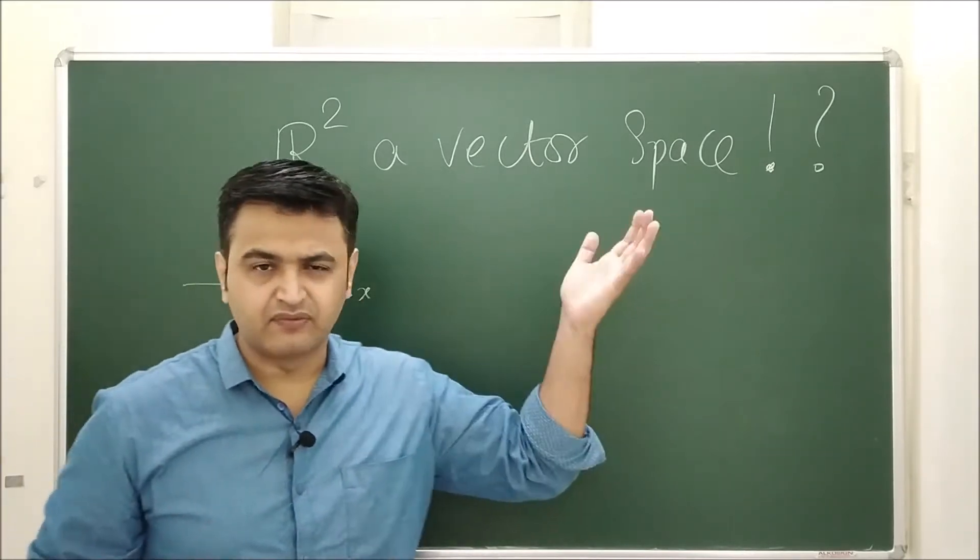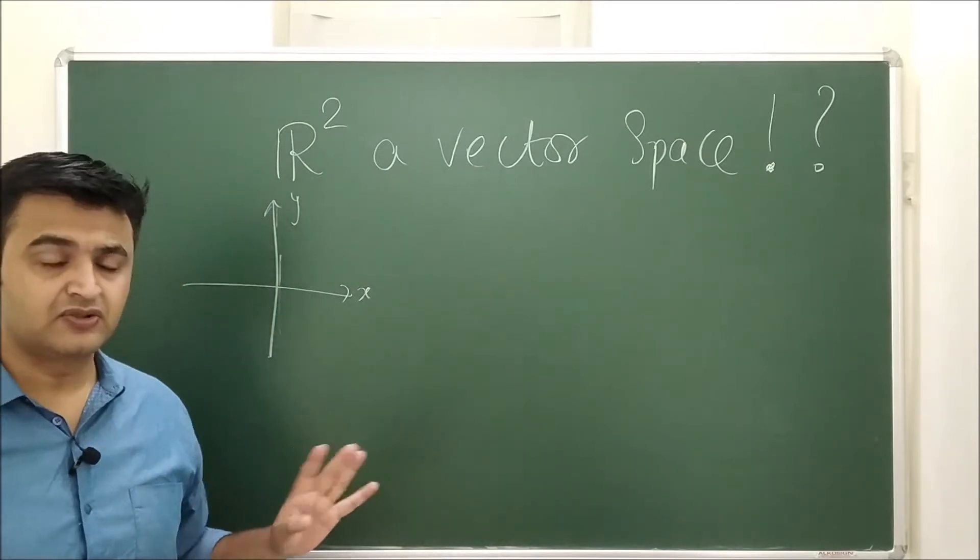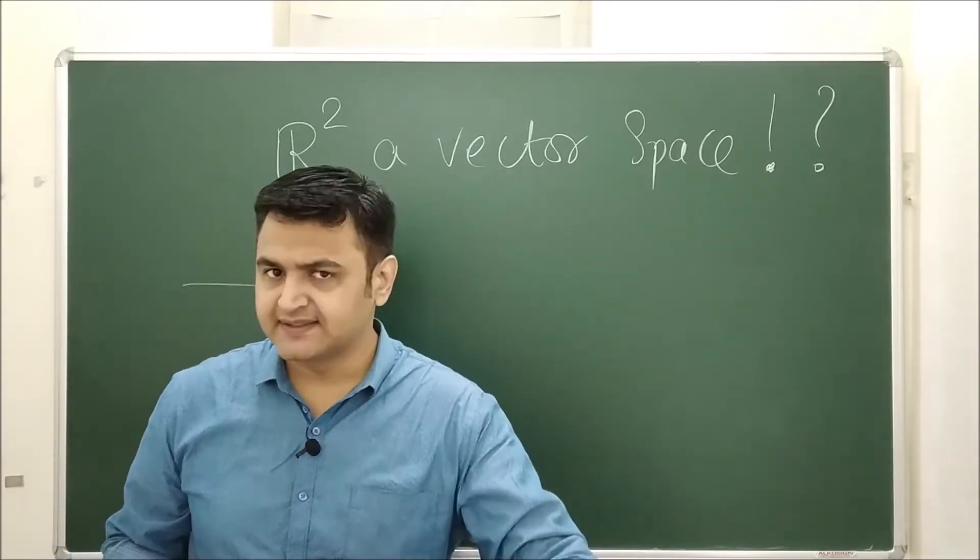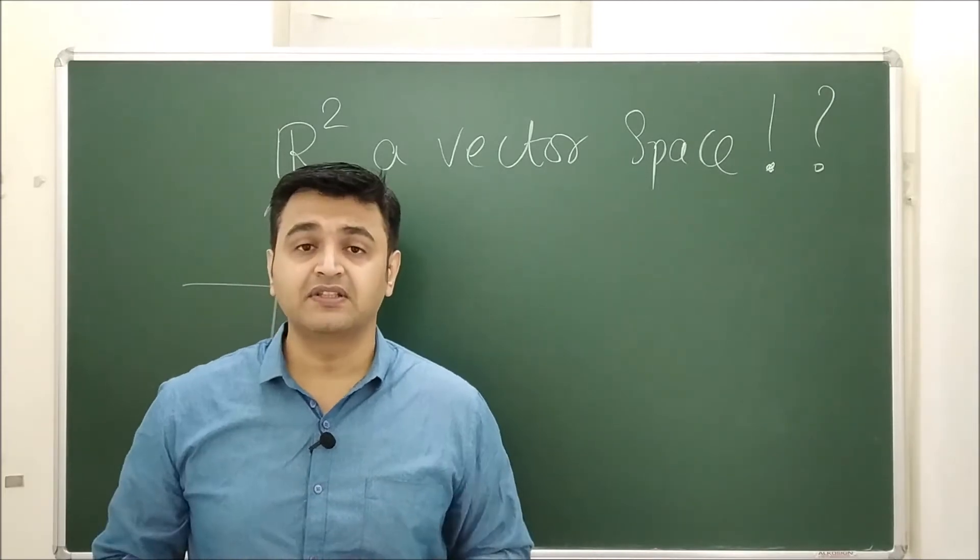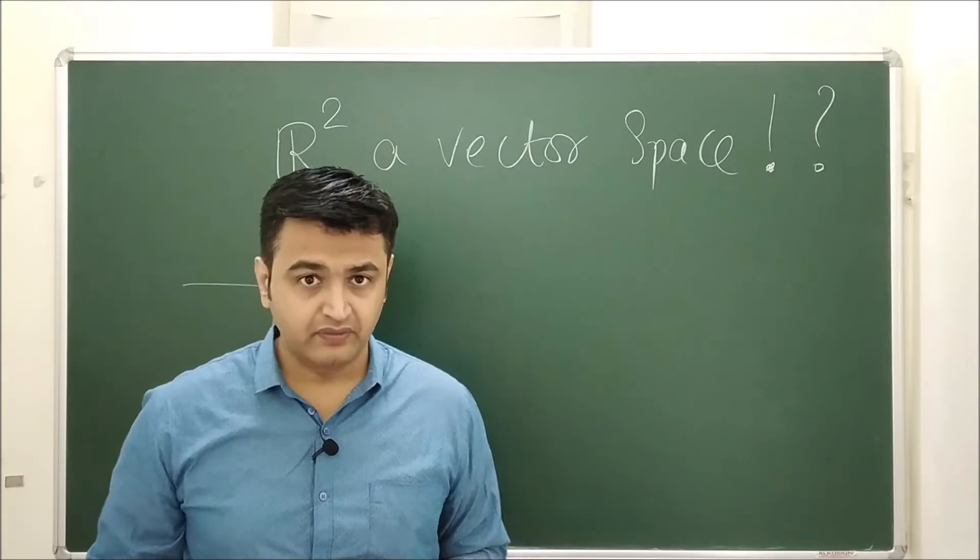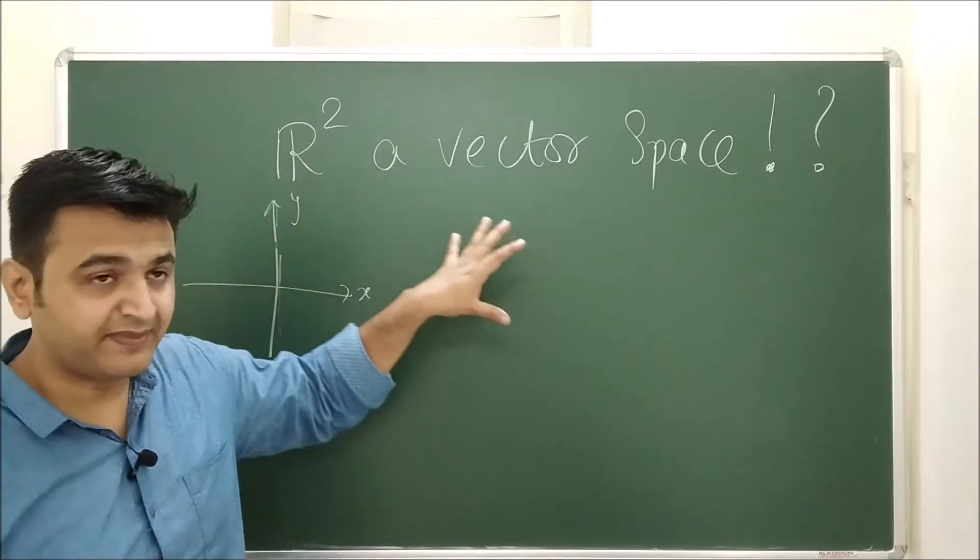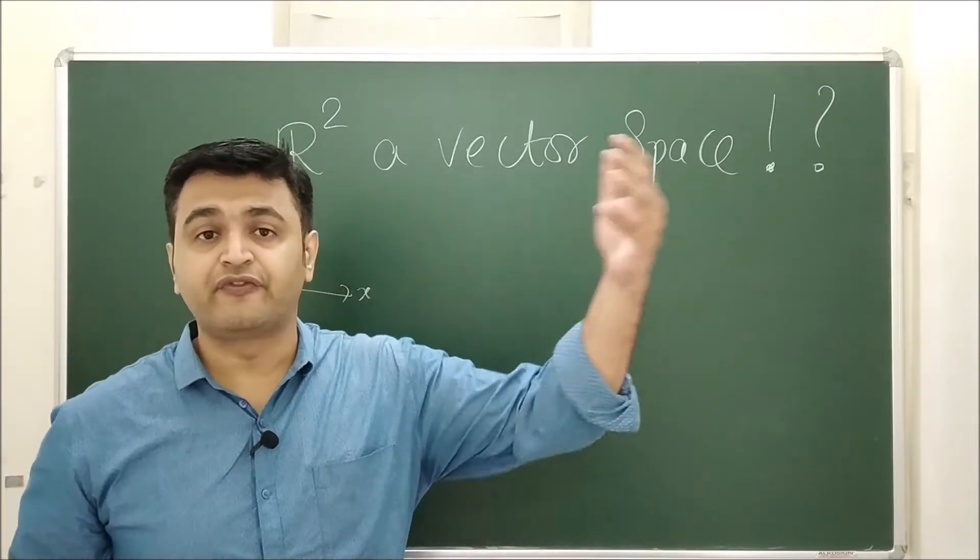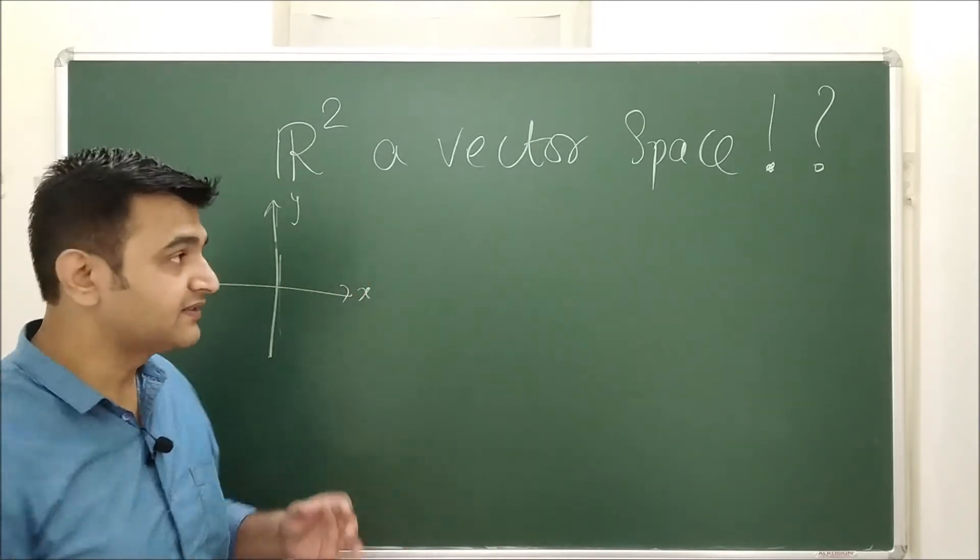One can play the same thing with R³, R⁴ and so on, but for simplicity let me play with R². So is R² a vector space? Usually people in a hurry say yes, or sometimes they keep on thinking. But what is the main point one should think of? Whenever someone asks you whether a set is a vector space or not, you should ask them the first question: over which field are you asking? Because what is a vector space? It's a set.